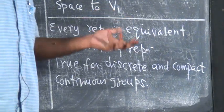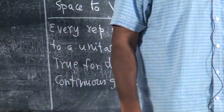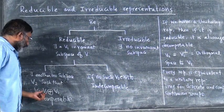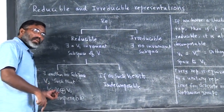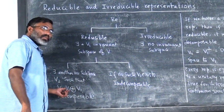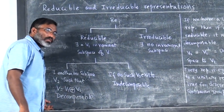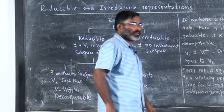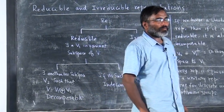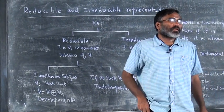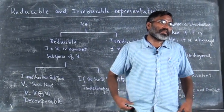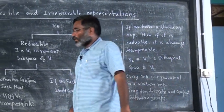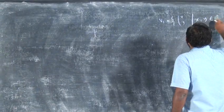So we can work with unitary representations. You take a reducible representation, decompose it, then see whether it is still reducible on V1; otherwise you further reduce. You reduce it until it becomes a set of irreducible representations. A representation can be written as a direct sum of irreducible representations.